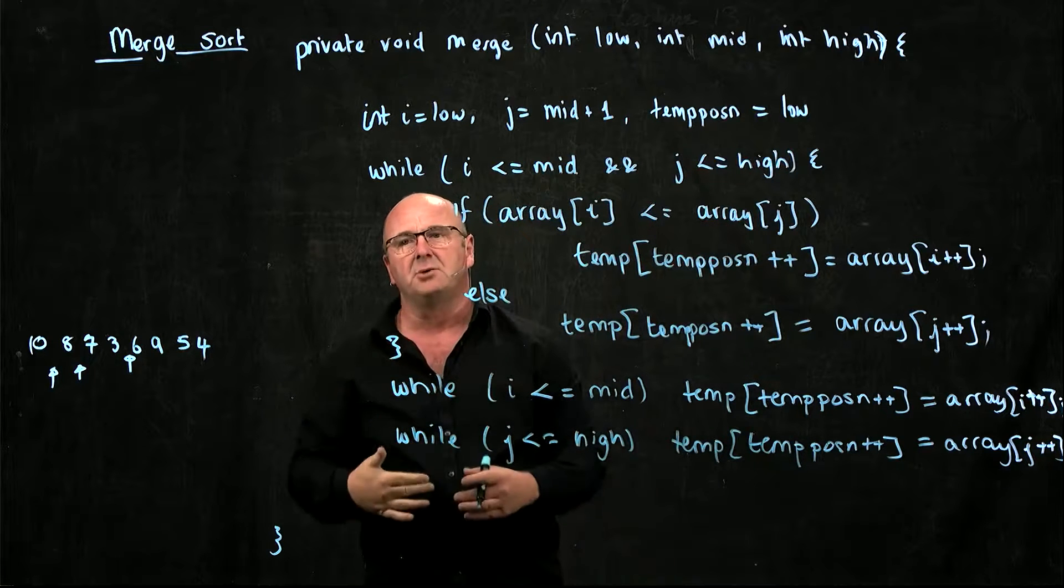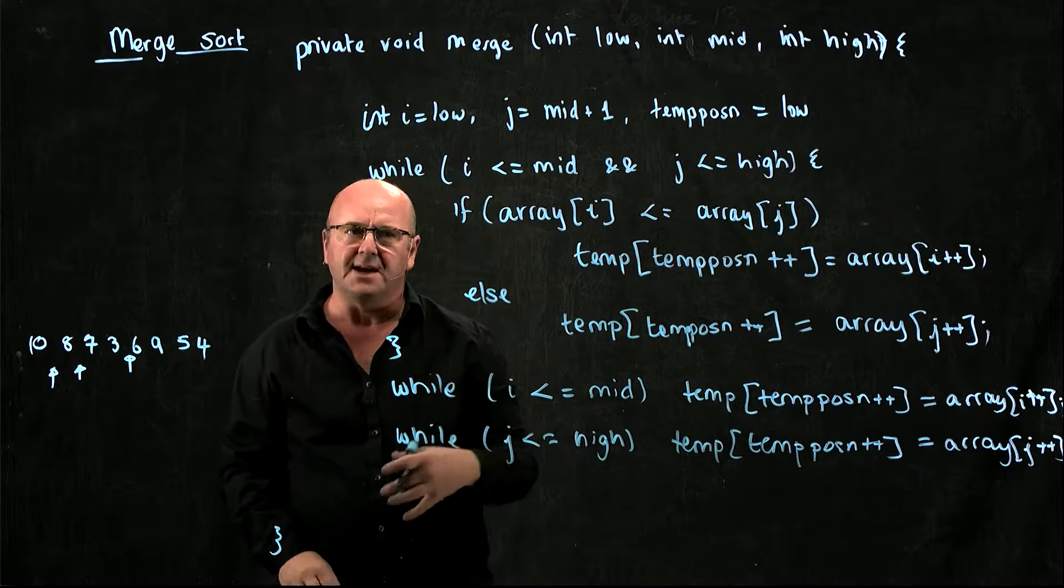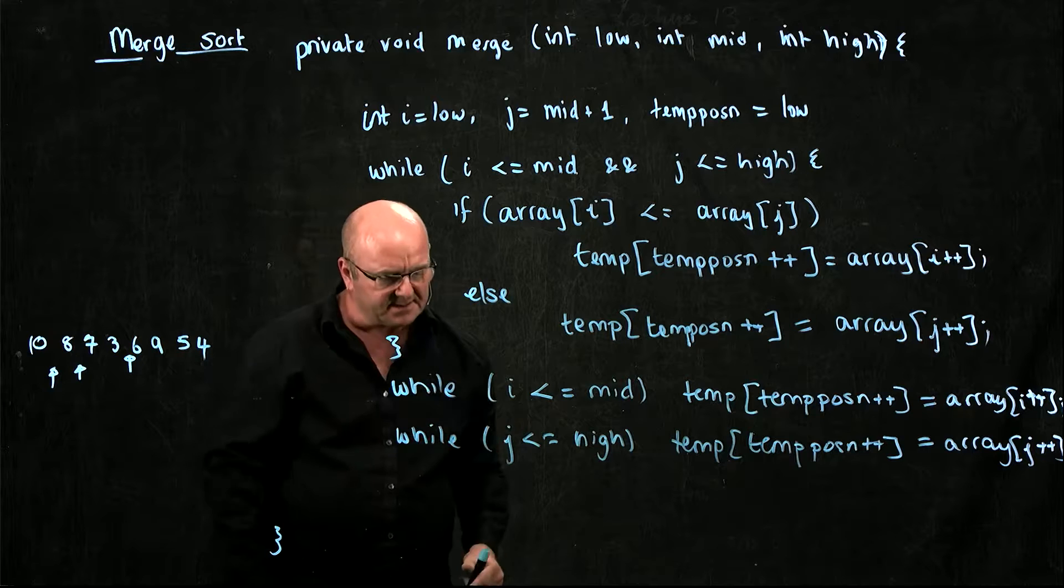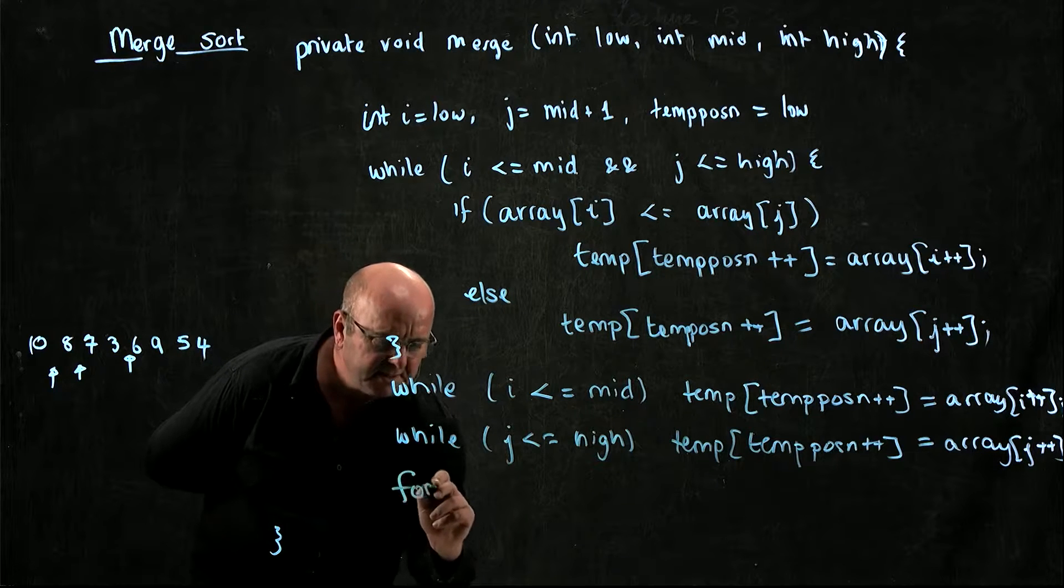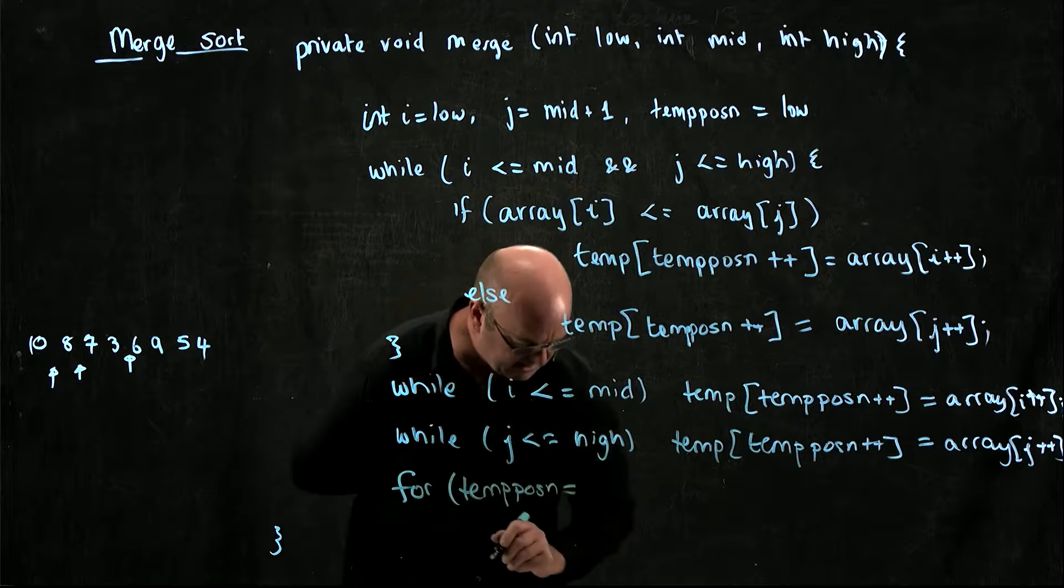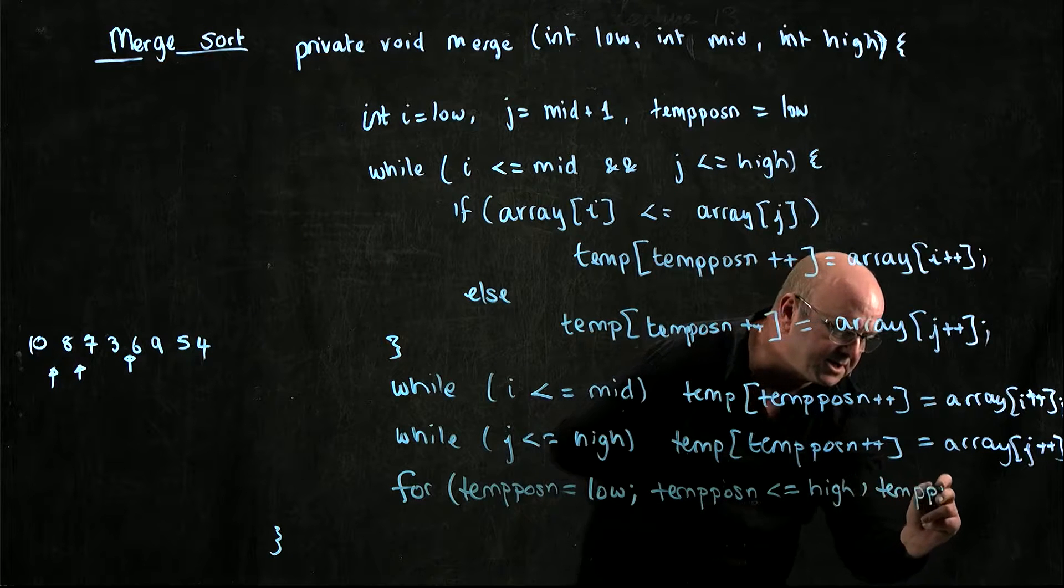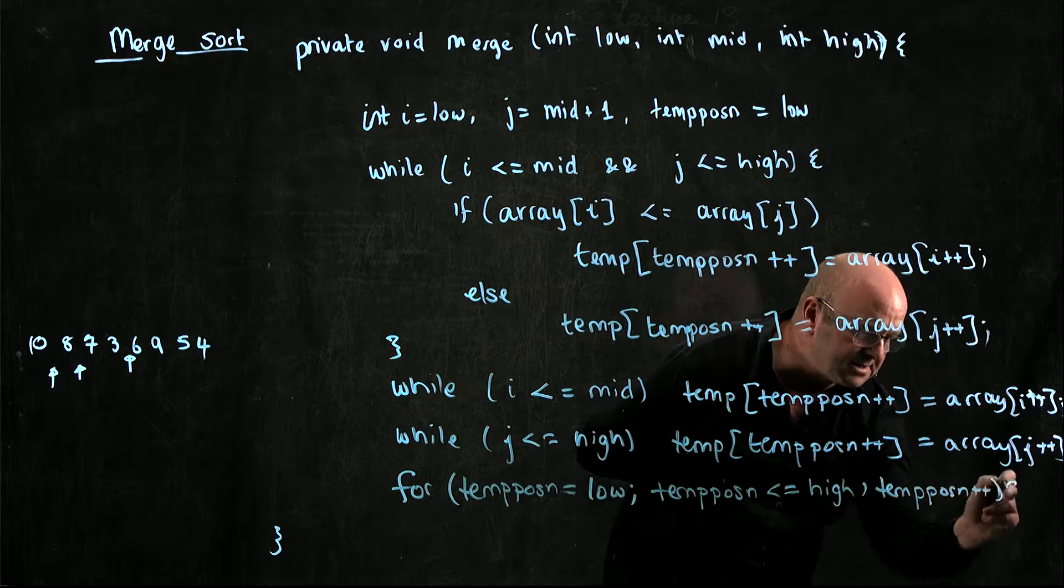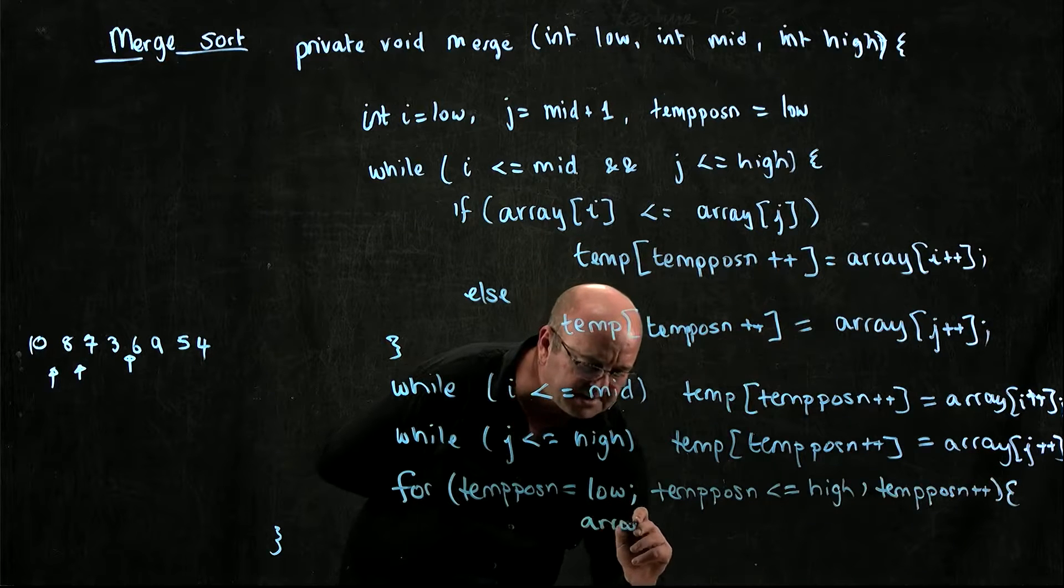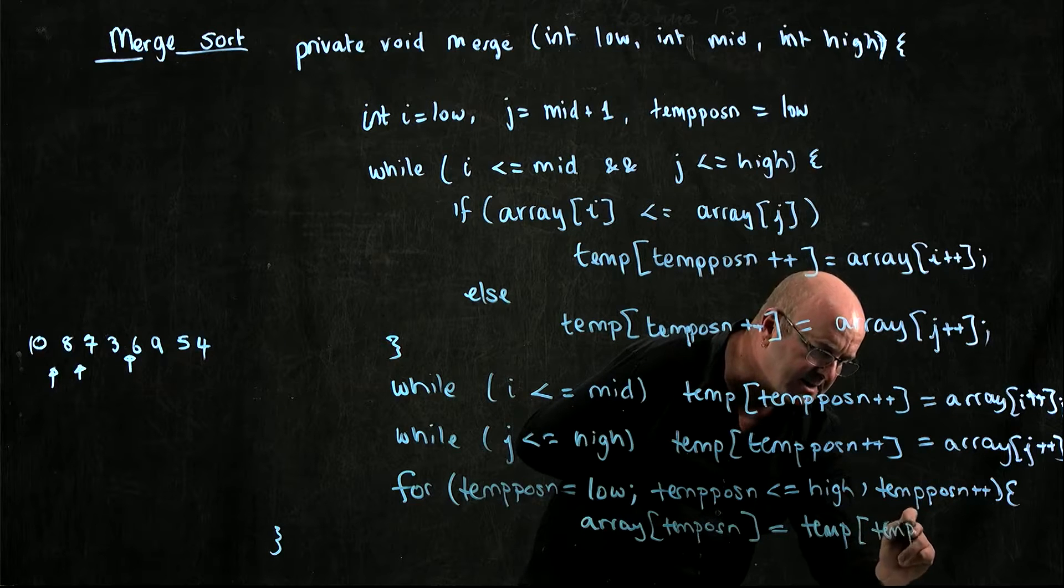Now all we need to do is copy those back into our original array, so that when we then go and use this merge again, our globally scoped array has the right variables. And so we can just do for temp position is equal to low, temp position less than or equal to high, temp position plus plus. array, that's our globally scoped array, at temp position equals temp[temp position].